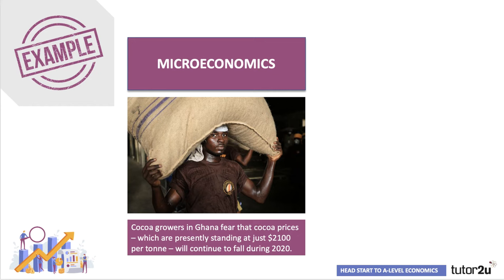Going back to micro: cocoa growers in Ghana fear that cocoa prices, which presently stand at just $2,100 per tonne, will continue to fall during 2020. The macroeconomics of the world economy plays a role, but the cocoa market in Ghana and the many thousands of small farmers and growers there is essentially a microeconomic issue affecting the Ghanaian economy.